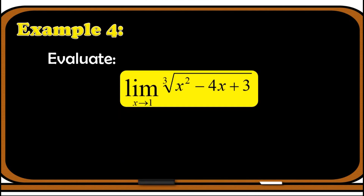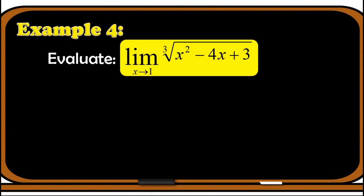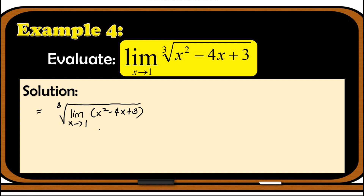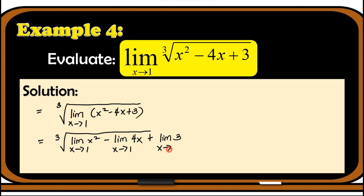Example number 4: evaluate the limit of the radical function — the cube root of x squared minus 4x plus 3 — as x approaches 1. The first thing we apply is the limit of radical or root, so this is written as the cube root of the limit of x squared minus 4x plus 3 as x approaches 1. Inside the radical, we apply the limit of addition or subtraction: the cube root of the limit of x squared minus the limit of 4x plus the limit of 3, all as x approaches 1.